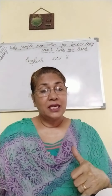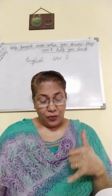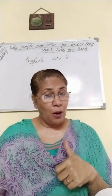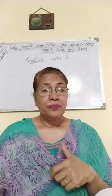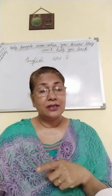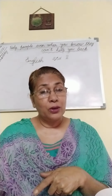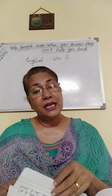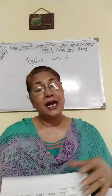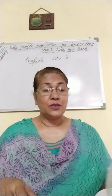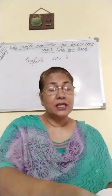Begin with a capital letter. For Aunt's name, Polly, it is a proper noun. For proper nouns, we use a capital letter. Tom also is a proper noun, so we use a capital letter. And at the end of the sentence, what do we do? Yes, we put a full stop.